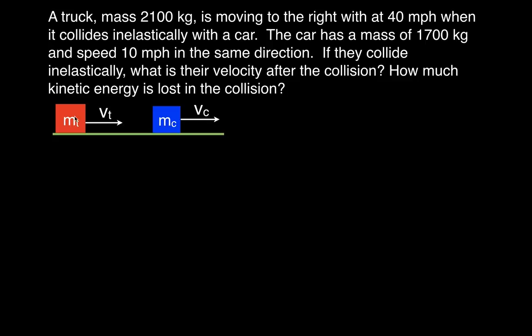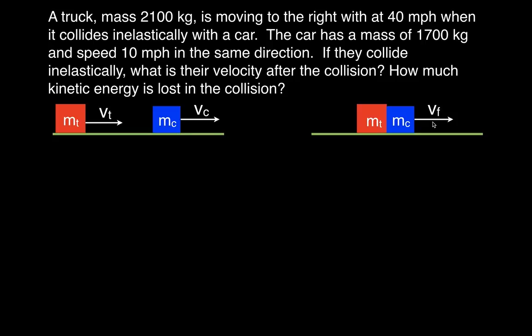Here I drew a picture. We have the truck with its mass, and the car is also going to the right. The truck is going to collide with the car inelastically, and then they are going to stick together — it should be obvious that they're going to be moving to the right. We want to know what the final velocity is, and we're going to use conservation of momentum.